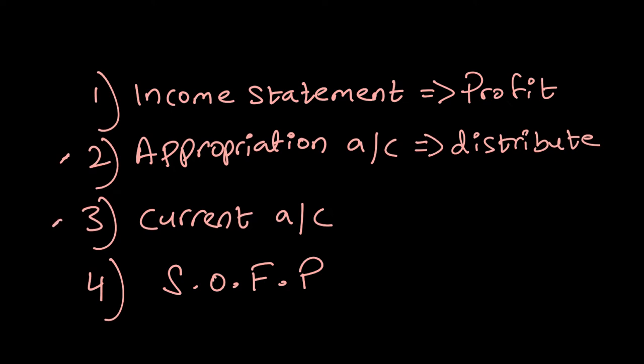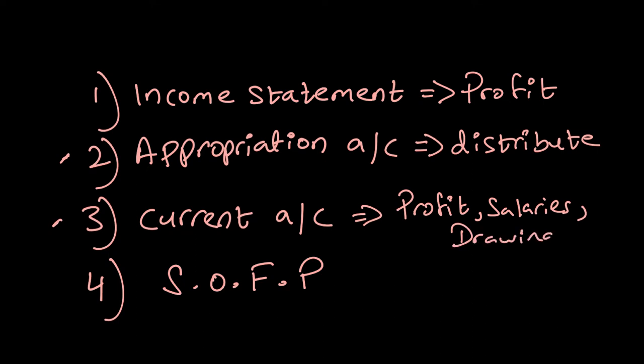After distributing profit we draw something called a current account. The current account shows how profits, salaries, and everything eventually impact your capital account. The idea is to differentiate what is a partner's investment versus what are their appropriations — meaning what profits partners get, what salaries they get, what their drawings are. All these distributions during the year flow to the current account, and after that we draw the statement of financial position.